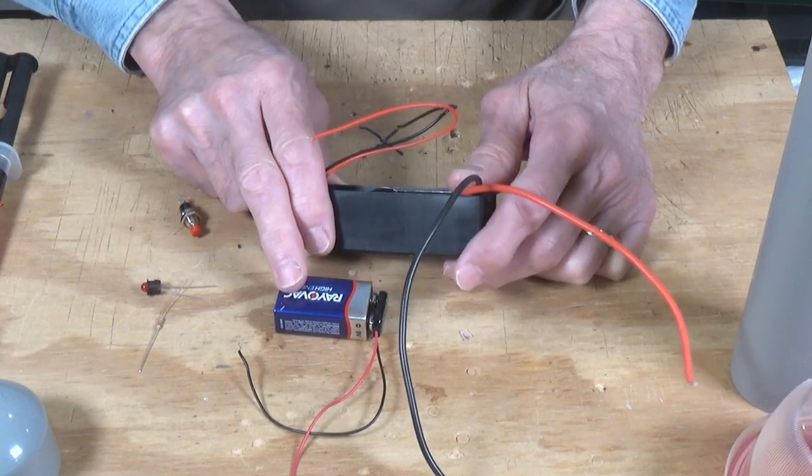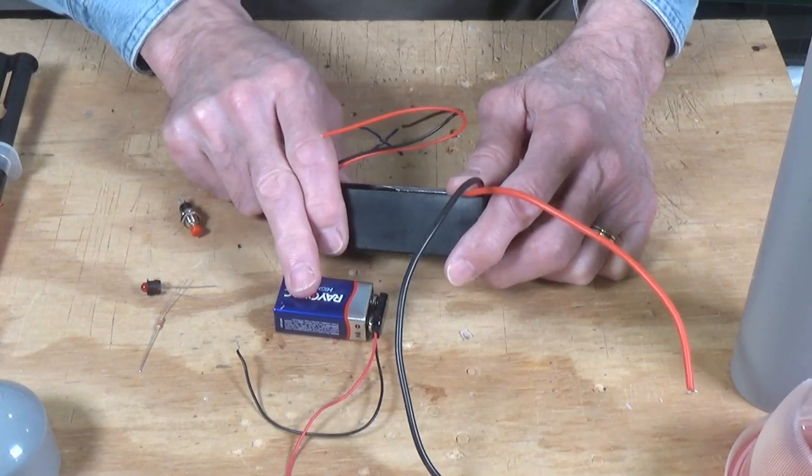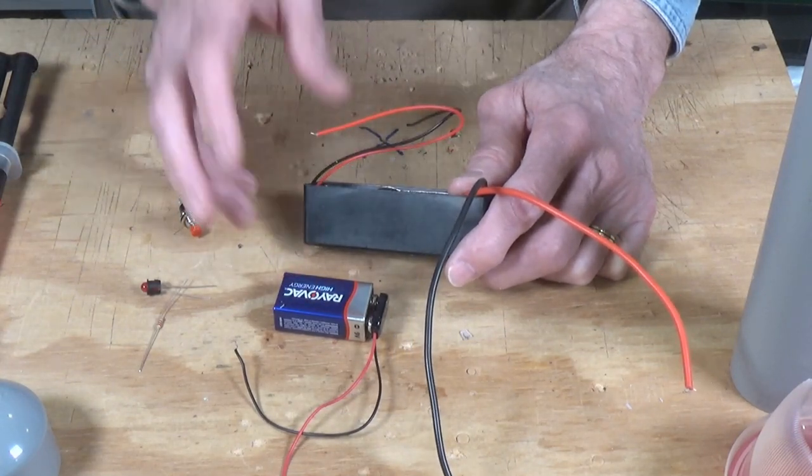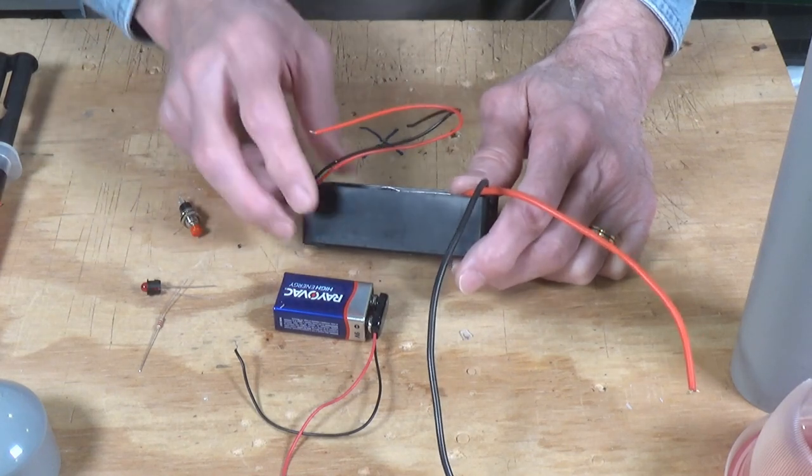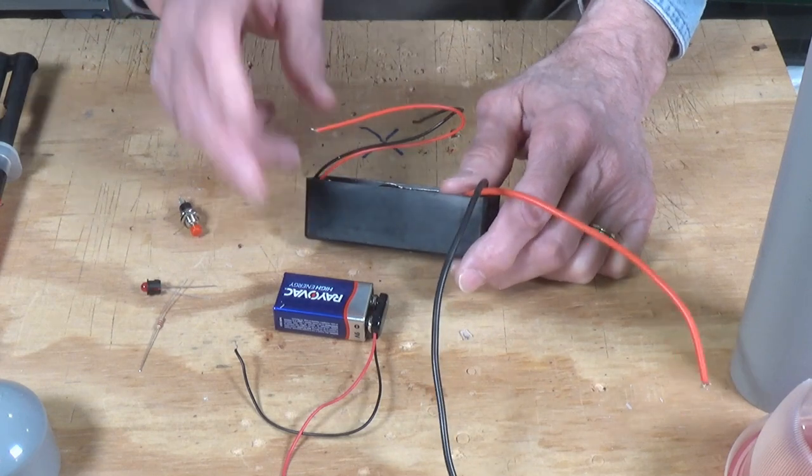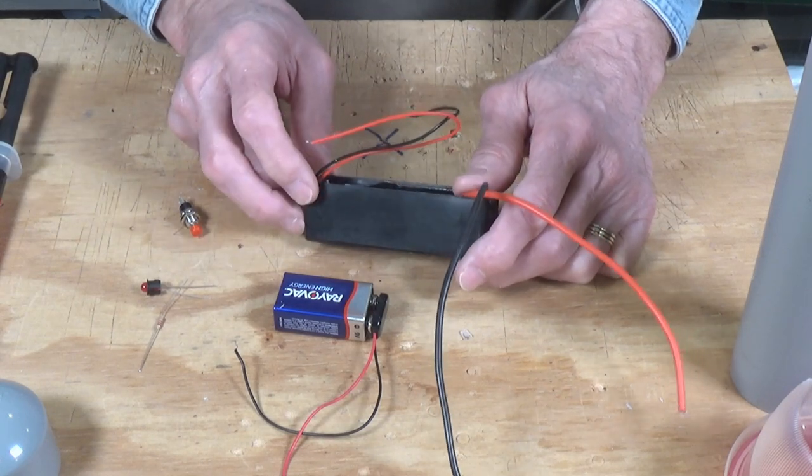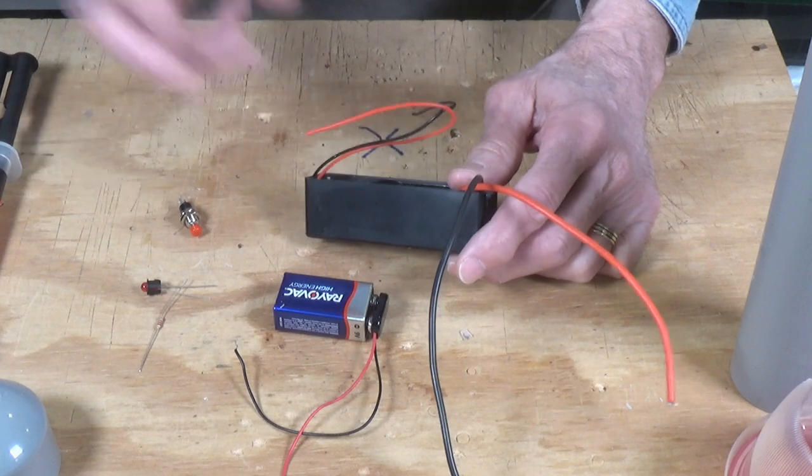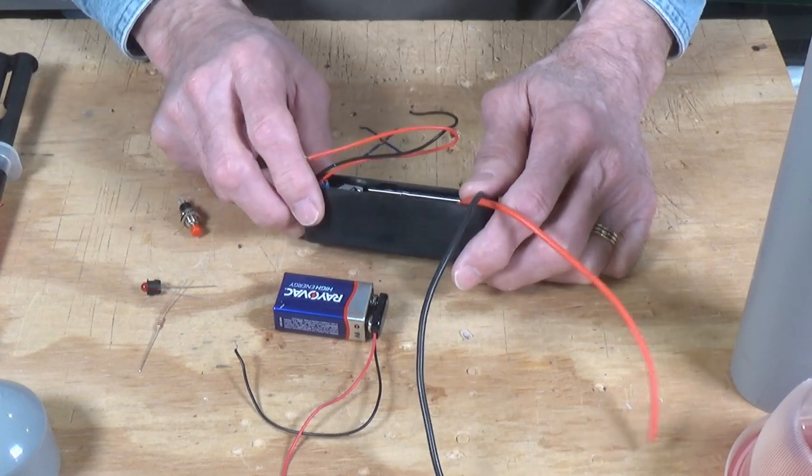But as I said, I will give you the link to Luke Towan's original video on this. And if you decide you want to go with a 12 volt power supply, you can just add that connector in place of the 9 volt or in addition to it. And he has a diagram that shows his wiring for that.